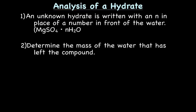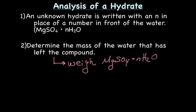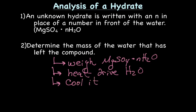So the first thing you want to do is to determine the mass of water that has left the compound. So how do we do that? Well, in the laboratory, the first thing you would do is you would weigh or get the mass of the MgSO4. We don't know how much hydrate. So we'd get the mass of that. Then we would heat it to drive off the H2O. So we're now going to cool it, and we're going to get the new mass. We're going to weigh again, and now what we have is just the MgSO4, because we drove off the water.